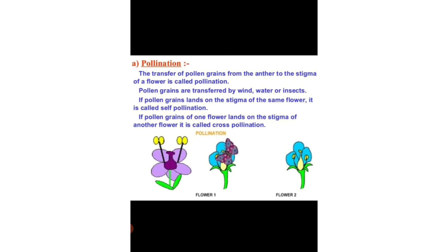Now we will learn about pollination. The transfer of pollen grains from the anther to the stigma of a flower is called pollination. Pollen grains are transferred by wind, water or insects.